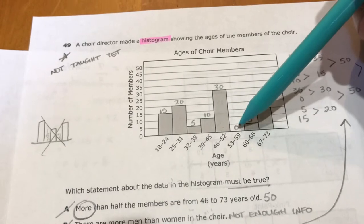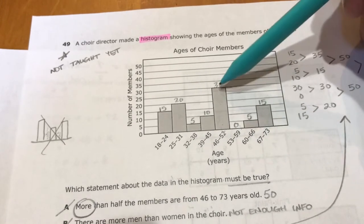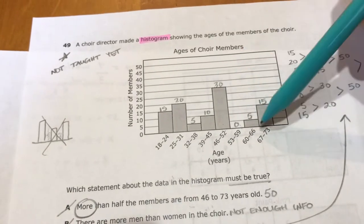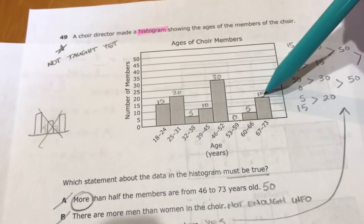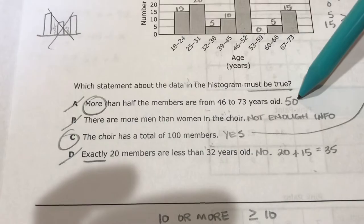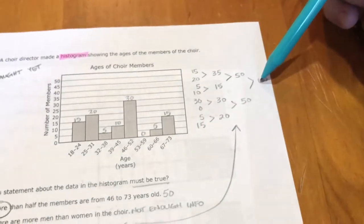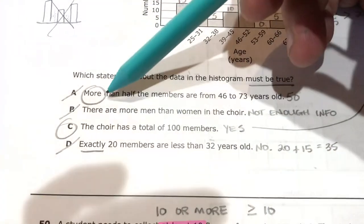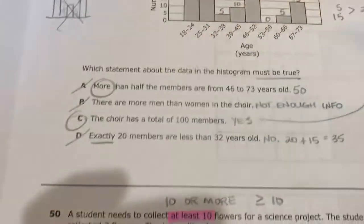And 35 plus 15 is 50. So that means there's 50 people in that range. Well, there was 100 total, so 50 is not more than half, so I could cross that out. It says there are more men than women in the choir. You don't have enough information to answer that question. Doesn't say anything about their gender.